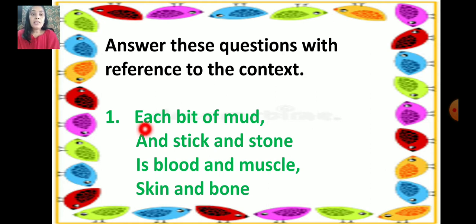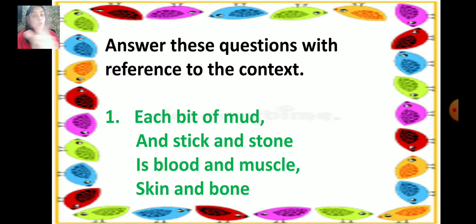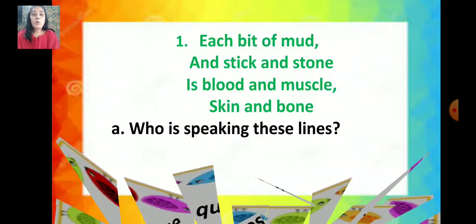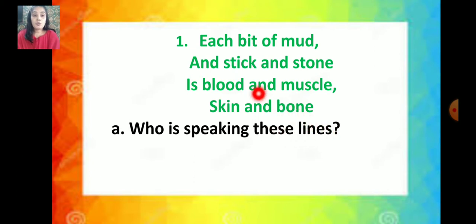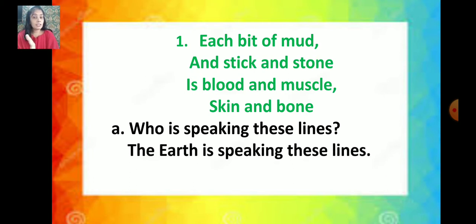The first question is based on the lines: 'Each bit of mud and stick and stone is blood and muscle, skin and bone.' Mud, stick and stone are blood, muscle, skin and bone for the earth. The first question is: who is speaking these lines? The earth is speaking these lines — it is not the poet or somebody else. The earth is speaking these lines.